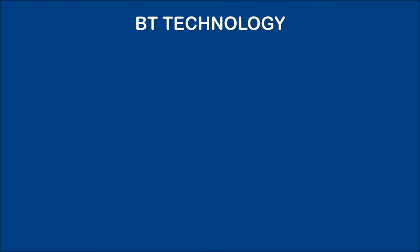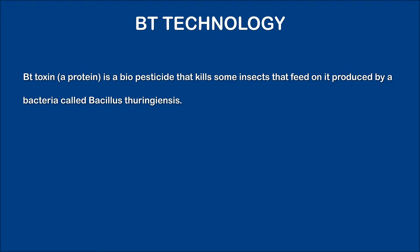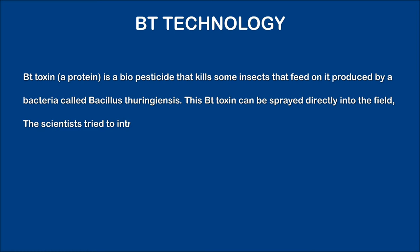BT technology. BT toxin, a protein, is a biopesticide that kills some insects that feed on it, produced by a bacteria called Bacillus thuringiensis. This BT toxin can be sprayed directly into the field. The scientists try to introduce this into a plant cell to make them resistant to insects.